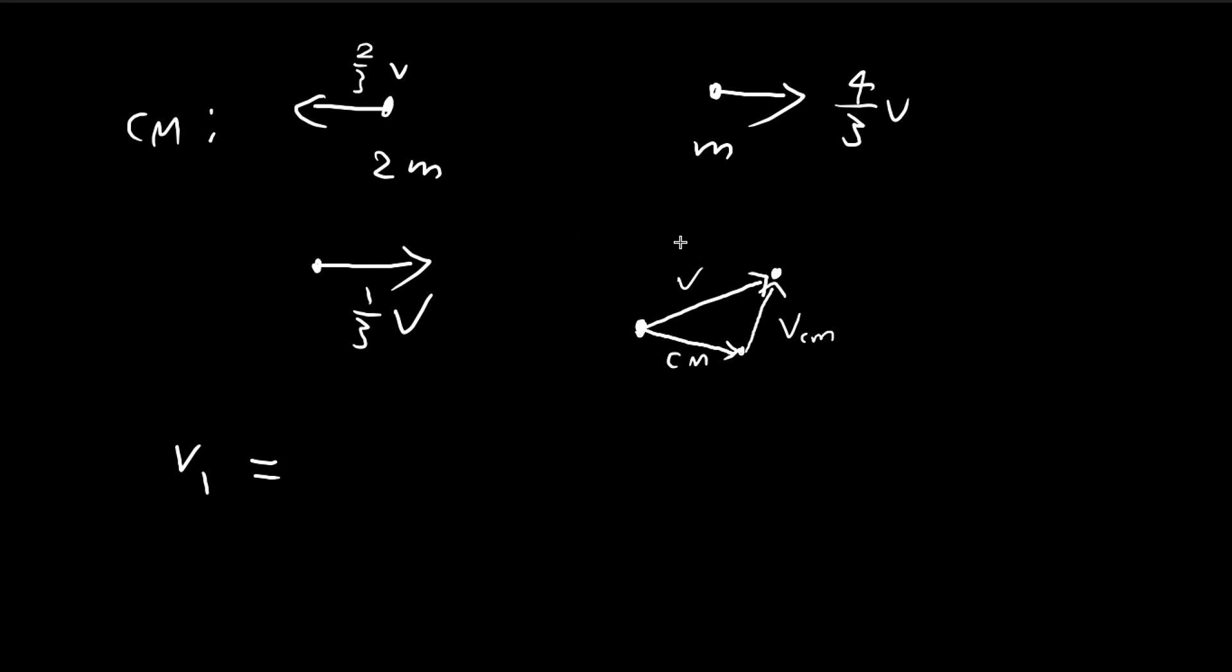So if we want to find the velocity in the lab frame, we just need to add the velocity of the CM frame plus the velocity of the particle with respect to the CM frame.